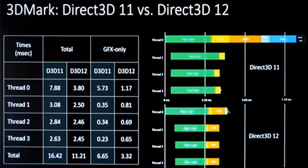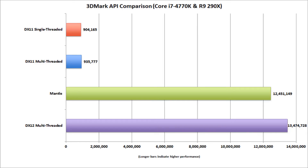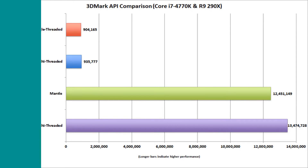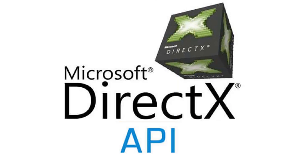DirectX 12 has one major advantage though — it makes use of all the cores in the CPU, unlike OpenGL and previous versions of DirectX. These graphs show the core usage of DirectX 11 versus DirectX 12. DirectX 12 uses all the cores, resulting in multi-threading and eventually better graphics and overall better frame rates. That's a wrap for this video — I'll see you all in another video soon. Until then, this is Steven signing off.